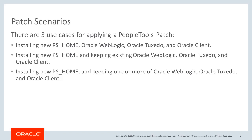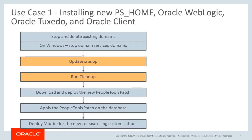There are three use cases for applying a PeopleTools patch. You will always need to install a new PS home for the new release; however, you can decide which other components to replace or retain. For use case 1, you have selected to install a new PS home, Oracle WebLogic, Oracle Tuxedo, and Oracle Client. For this use case, you will need to stop and delete all domains, update the site.pp, and run the cleanup.